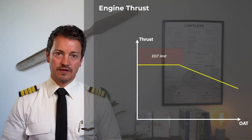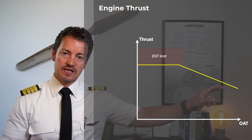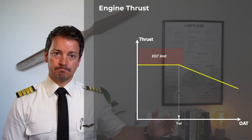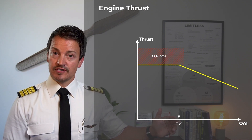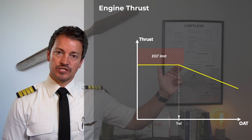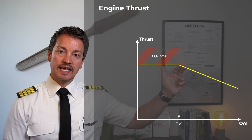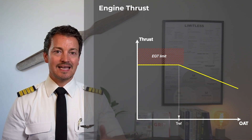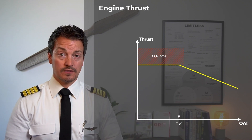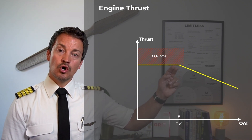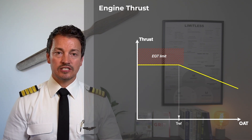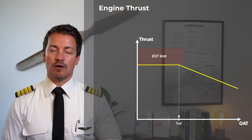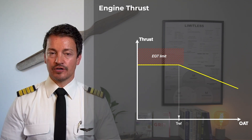Looking more closely at the temperature graph, we can see it produces a value we call TREF — reference temperature. TREF is the temperature above which the engine loses performance: for every one degree above that temperature, we get less and less power. But at any temperature below TREF, the engine will not produce more power; it will simply produce the same power with less effort within the engine.